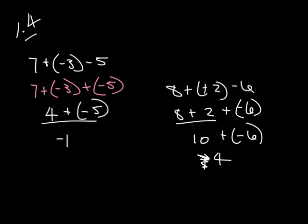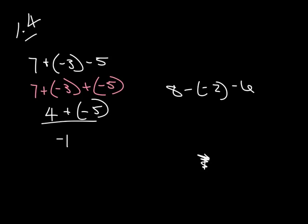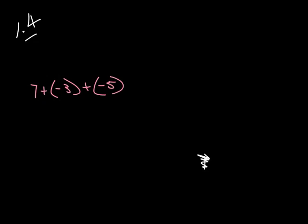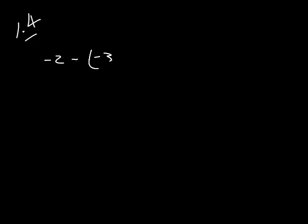When we look at C, let's go ahead and erase some of this stuff here so we have more room. Alright, so C: we've got negative 2 minus negative 3 plus 1 minus 5.